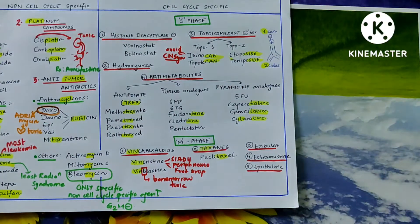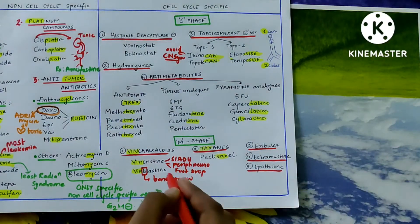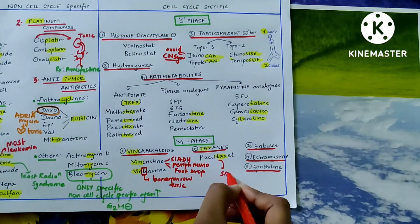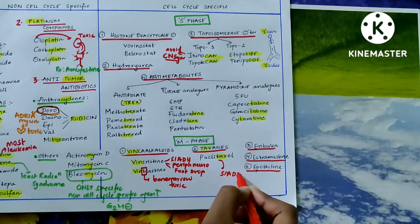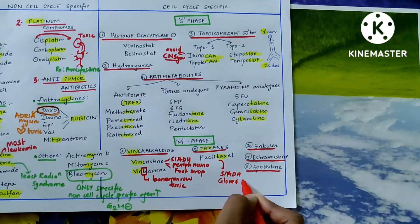Vincristine's side effects are SIADH, peripheral neuropathy, and foot drop. Paclitaxel also causes SIADH and glove-and-stocking neuropathy, similar to peripheral neuropathy.